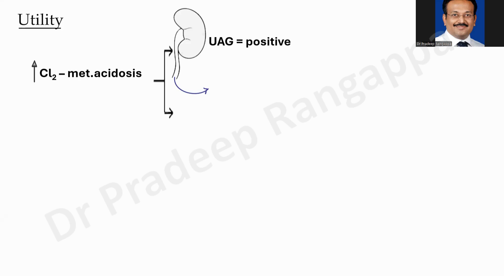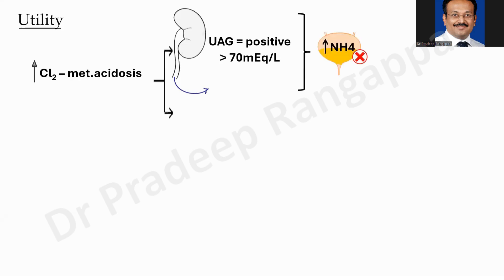If urine anion gap is positive — more than 70 mEq/L — you have to think the kidney is unable to compensate, unable to maintain electrical neutrality, because of various disturbances. The commonest cause of a positive urine anion gap in the setting of hyperchloremic metabolic acidosis is renal tubular acidosis, which can be type 1 distal or type 4. The compensatory mechanism of the kidney is to increase urinary ammonium, which is the unmeasured cation.